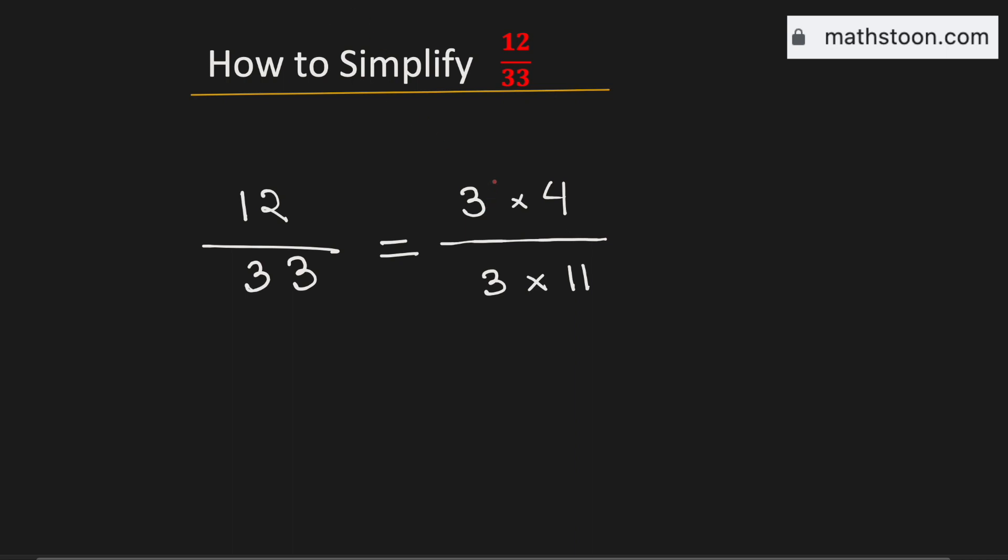Now we can cancel these 3s because it is present in both the numerator and the denominator. So this is now equal to 4 over 11.